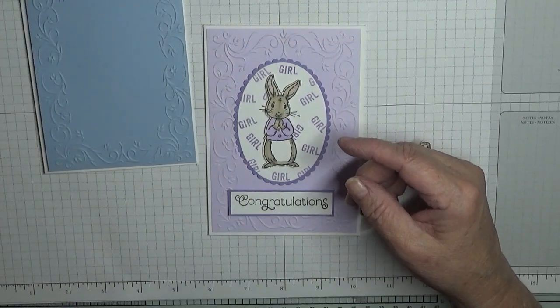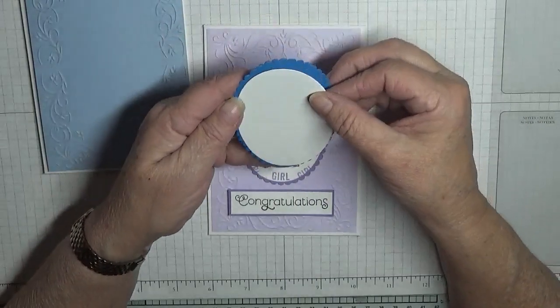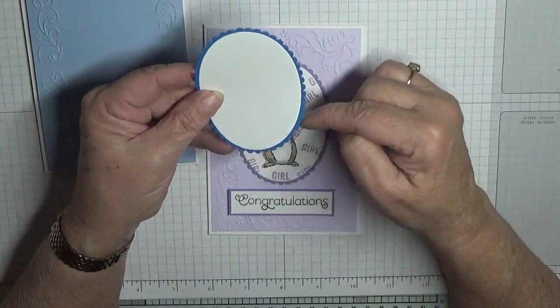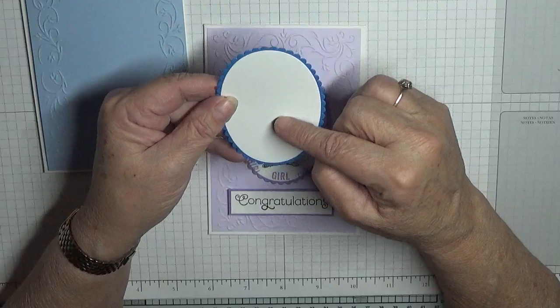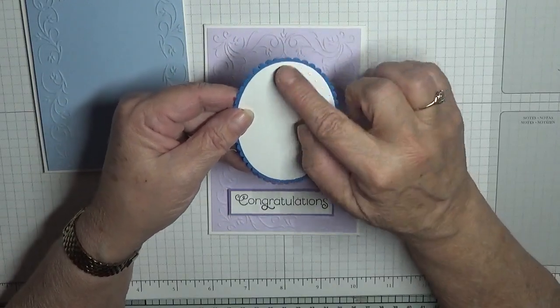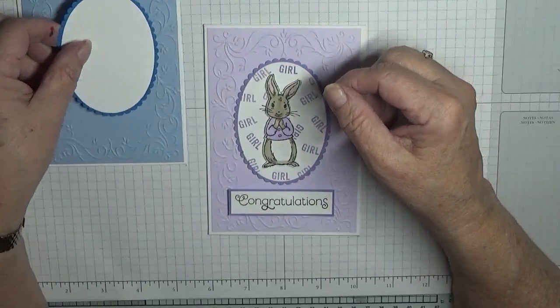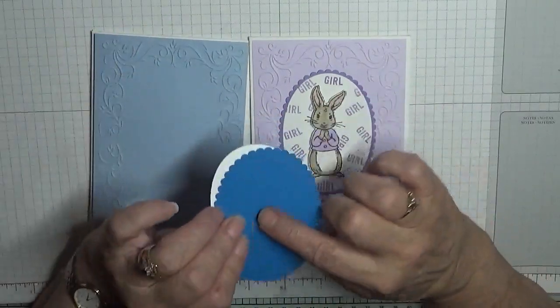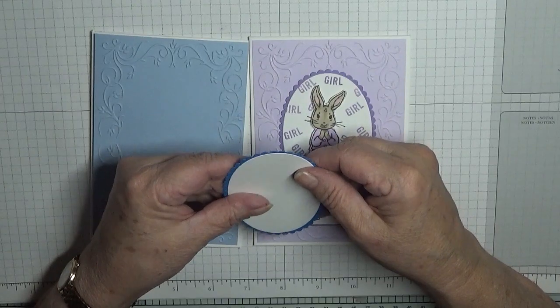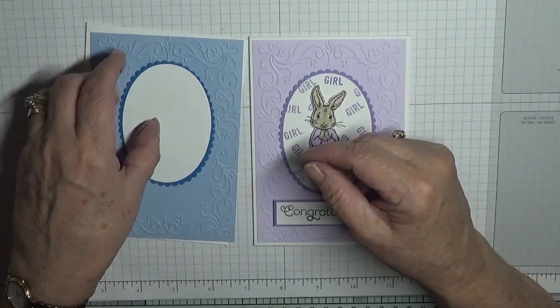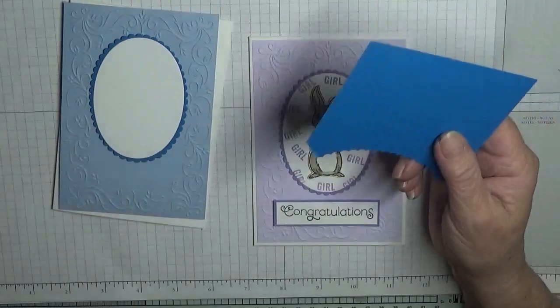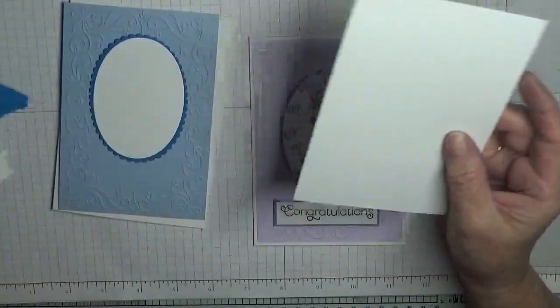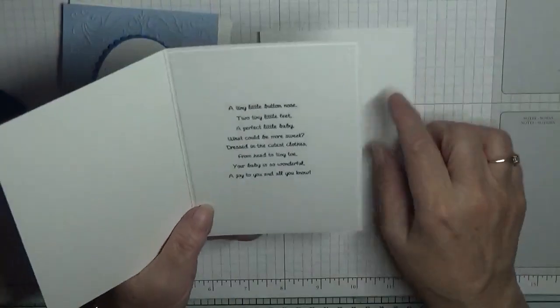I have also cut out an oval and scalloped oval. This is the second largest scalloped oval, so this must be either the third or second largest oval, and that will sit on like that. This is Pacific Point. I thought that went quite nice with that, and I've got a scrap of Pacific Point and a scrap of white to do the stamping, and a piece of white to go inside.